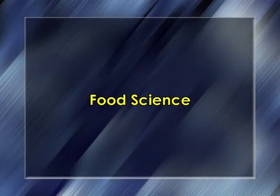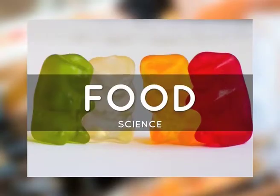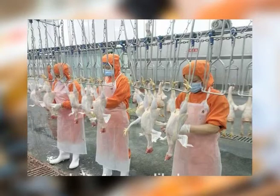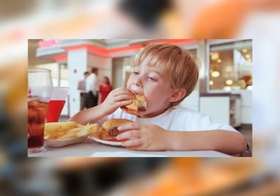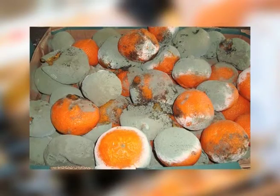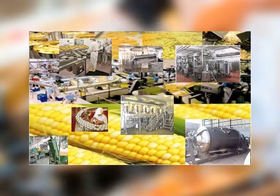Let us first introduce food science. Food science is a discipline concerned with all technical aspects of food, beginning with harvesting or slaughtering and ending with cooking and consumption. Food science is the study of the physical, biological and chemical makeup of food, the causes of food deterioration and the concepts underlying food processing.